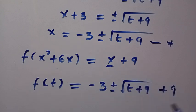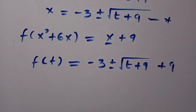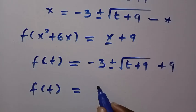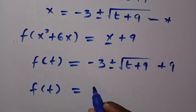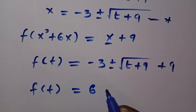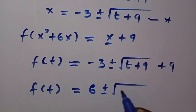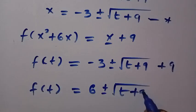Plus 9. By proceeding, we have f(t) = -3 + 9, which gives us 6 ± √(t + 9).